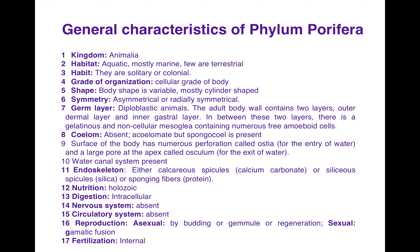Their shape is variable, mostly they are cylindrical. They may be asymmetrical or radially symmetrical. They are diploblastic animals containing two layers: an outer dermal layer and an inner gastral layer. In between these two layers there is a gelatinous and non-cellular mesoglia which contains numerous free amoeboid cells.